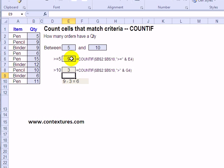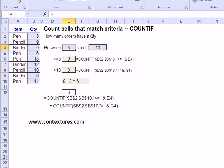So if we look at our total over 5 and then subtract any that shouldn't be included because they're over 10, 9 minus 3 would give us a 6. So instead of having two separate cells we can combine those two formulas into one cell.